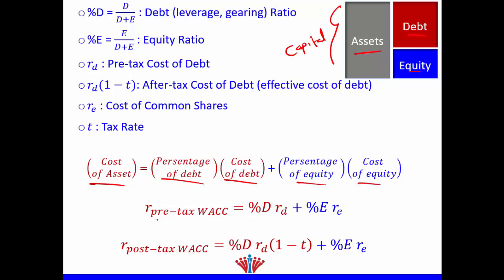Our pre-tax WACC — our before-tax weighted average cost of capital — will be the percentage of debt (debt divided by both debt and equity) times cost of debt, plus the percentage of equity (equity divided by both debt and equity) times cost of equity.